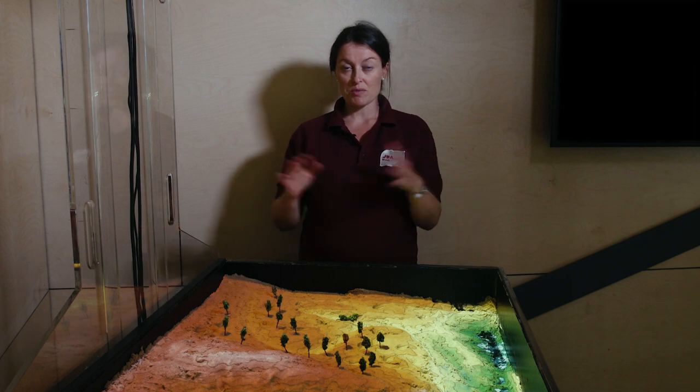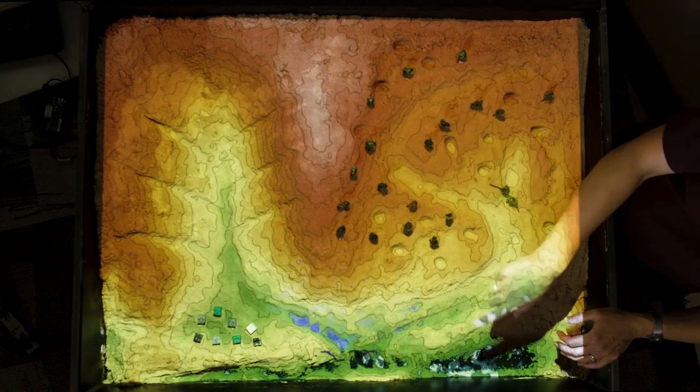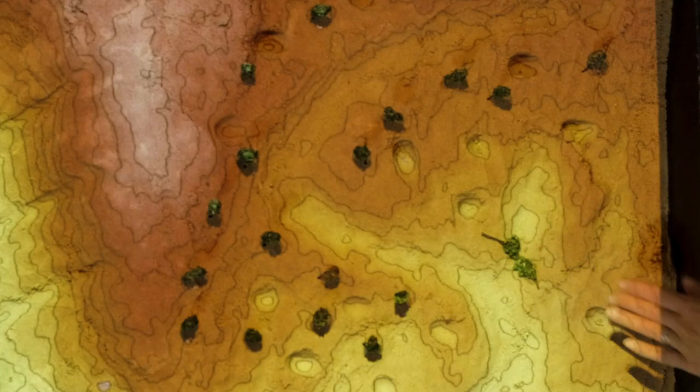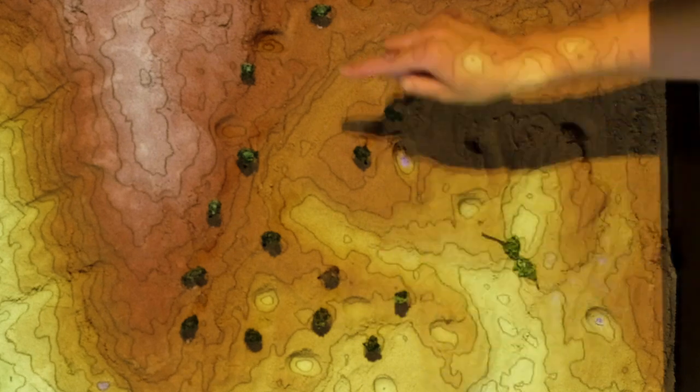This side of the catchment is a much more naturalized looking catchment. We have got a meandering river channel, some trees planted around, some woody debris in some of the channels, and we have also got small little runoff attenuation features.